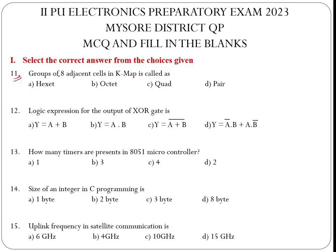A group of eight adjacent cells — another name is octet. The logic expression for the output of an XOR gate: A XOR B is nothing but A-bar·B + A·B-bar. So the answer is option D.